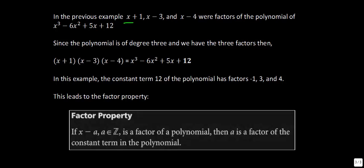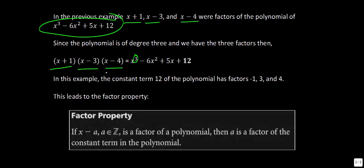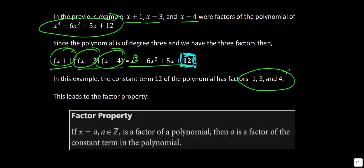As we saw, x plus 1, x minus 3, and x minus 4 were factors of this polynomial. Since the polynomial is of degree 3, we have exactly three factors. If you multiply them all out using the distributive property, you get back the original polynomial. Notice the constant term of 12: the factors give values of negative 1, 3, and 4. This relationship — where the potential factor values come from the constant term — is called the factor property.